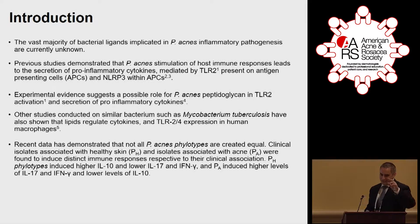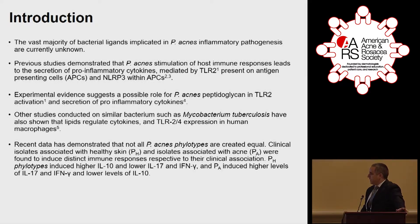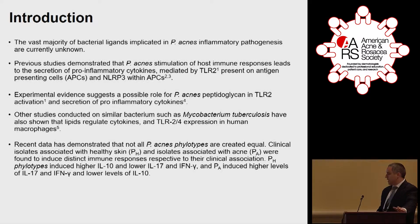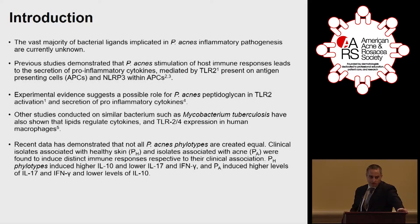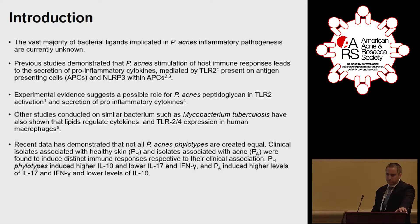As my predecessor, Professor Agak, excellently presented, we know that there are different groups or subgroups of P. acnes: those associated with healthy skin — PH — and isolates associated with acne, which we'll from here on refer to as PA. These two subgroups were found to induce a distinct immune response, namely that the PH group elicited an anti-inflammatory cytokine profile with higher levels of IL-10 and lower levels of IL-17 and interferon gamma, whereas the PA subgroup induced higher levels of IL-17 and interferon gamma and lower levels of IL-10.